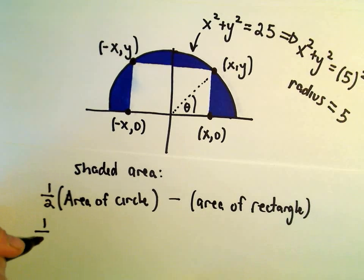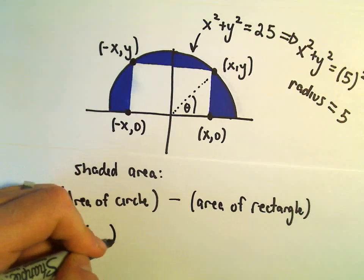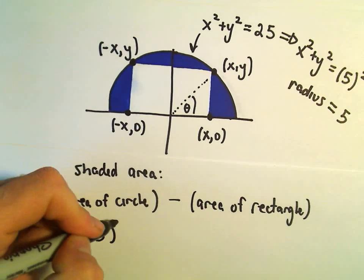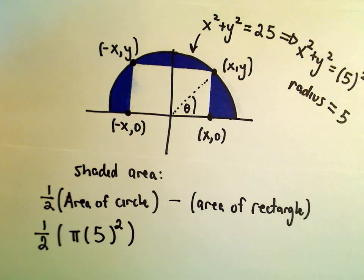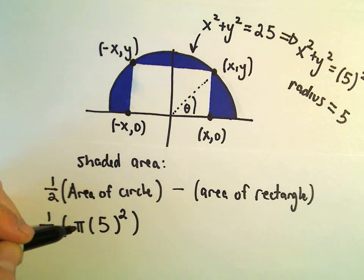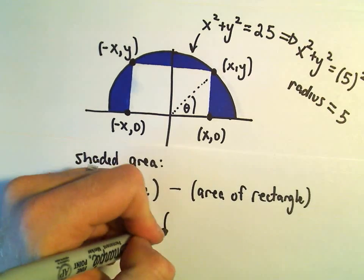Alright, well, the area of the circle is easy. That's just pi times the radius squared. But again, we said our radius is 5. So the top half of the circle will simply have an area of one half times pi times 5 squared minus the area of the rectangle.